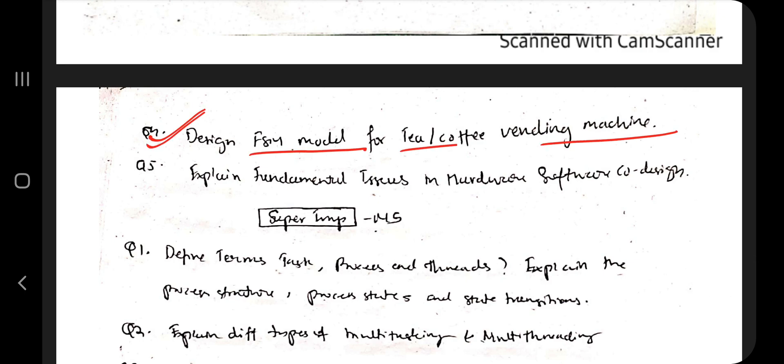Then there is the FSM model for the tea-coffee vending machine — a super important question. There is one for the seat belt as well, and many others, but the most important one is the tea-coffee vending machine. It is a very simple yet very important question, so make sure you know this very well.